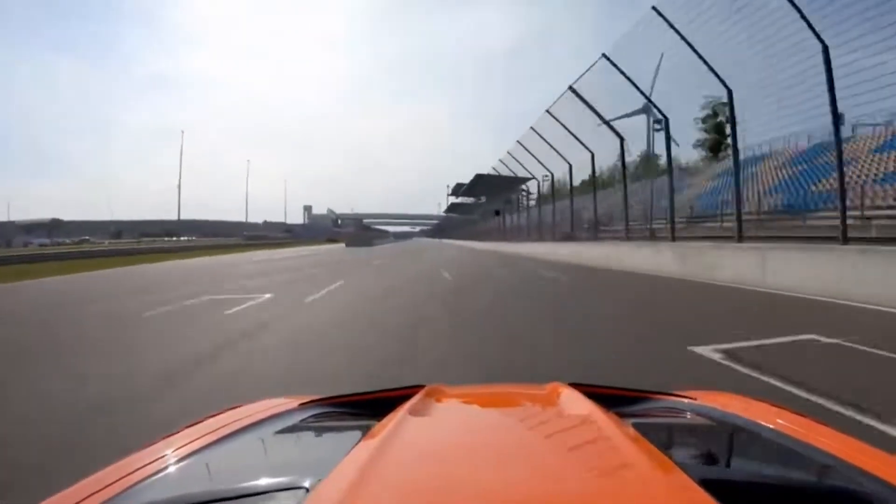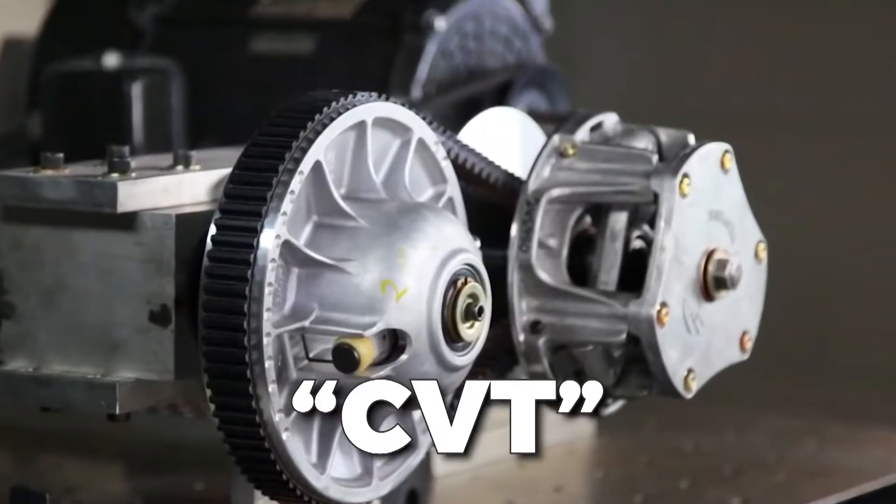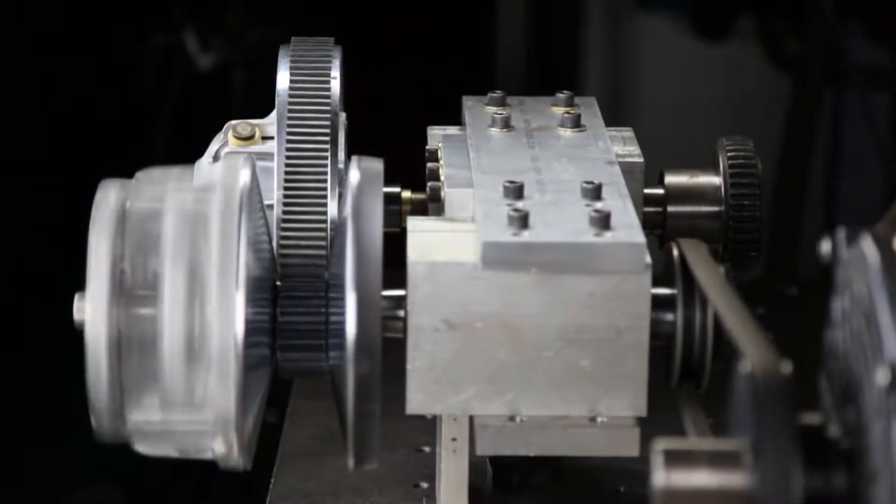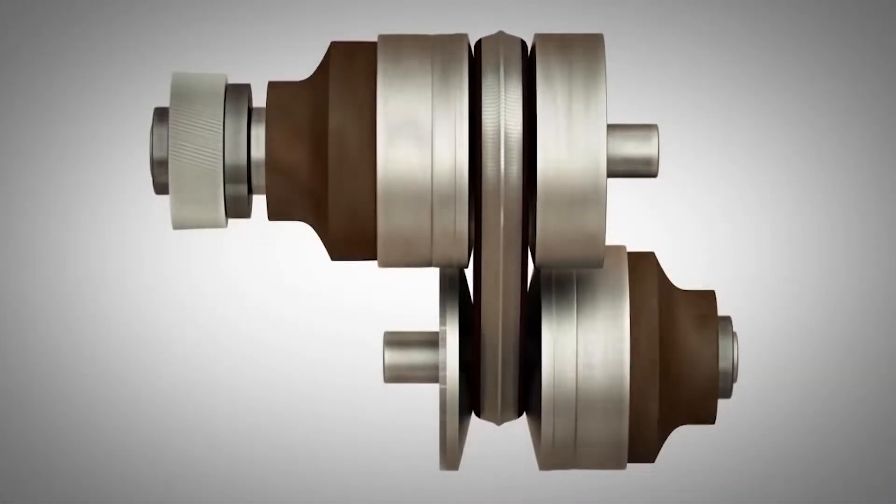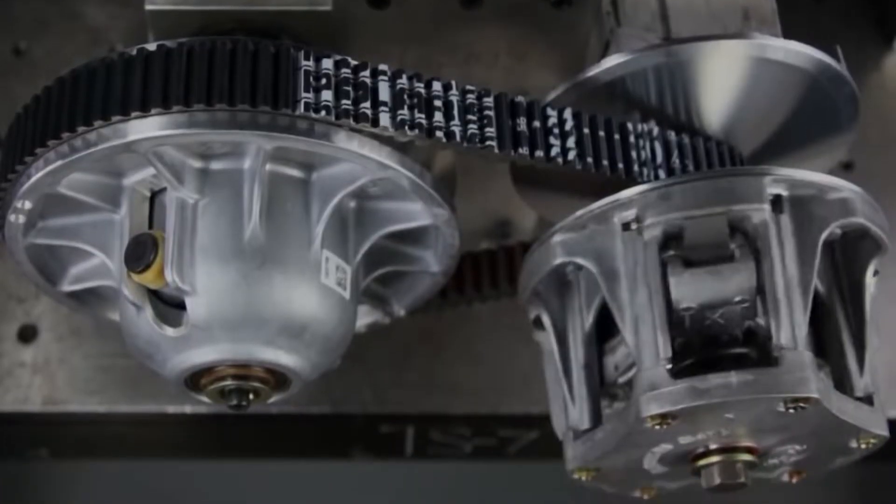Coming up next on the list, we have Continuously Variable Transmission or CVT, a single-speed automatic gearbox that is small in size and easy to build. The CVT box consists of two cone-shaped pulleys connected by a V-shaped drive belt, one to the engine and the other to the wheel.